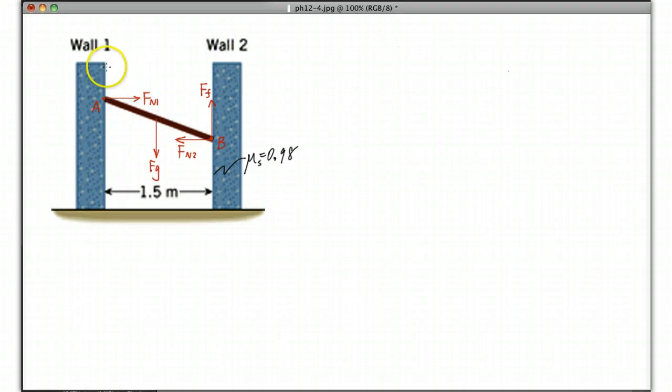Wall one is smooth, wall two is not. And if you place it like this, the question tells you the static friction coefficient is 0.98 between the board and wall two.